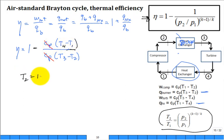T2 is equal to T1 times the pressure ratio P2 over P1 to the K minus 1 over K. And we're going to substitute that right in there.